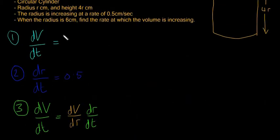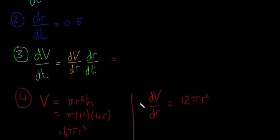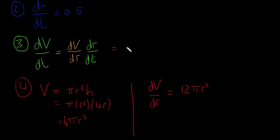So now we have this. We can sub it straight back up into this formula here. Actually, I'm going to sub it into here first. So dV/dr is equal to 12πr². And dr/dt is 0.5.